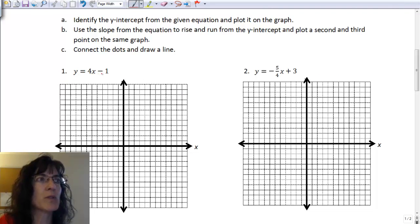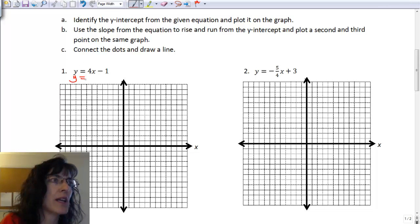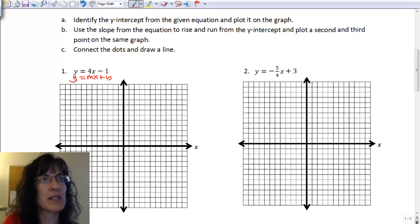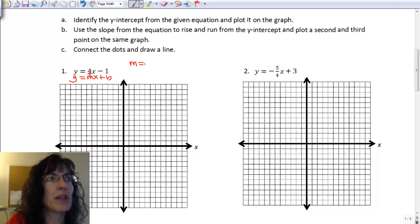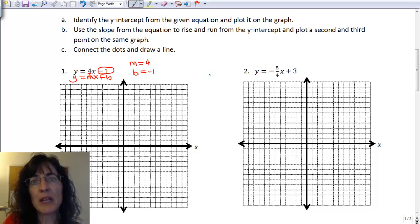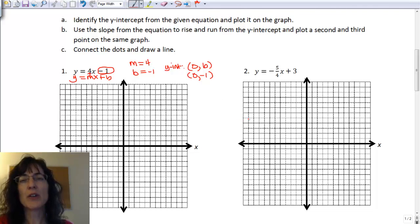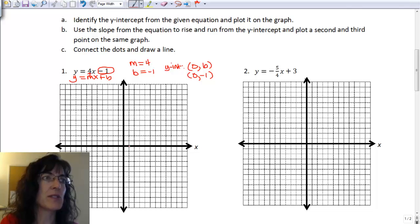My equation is y equals 4x minus 1. I think about y equals mx plus b. If I just look straight above, it has to be solved for y, and this one is. My m is just that 4, and my b is this whole thing. I have to take the sign with it, so my b is negative 1. I can do part a and find the y-intercept.